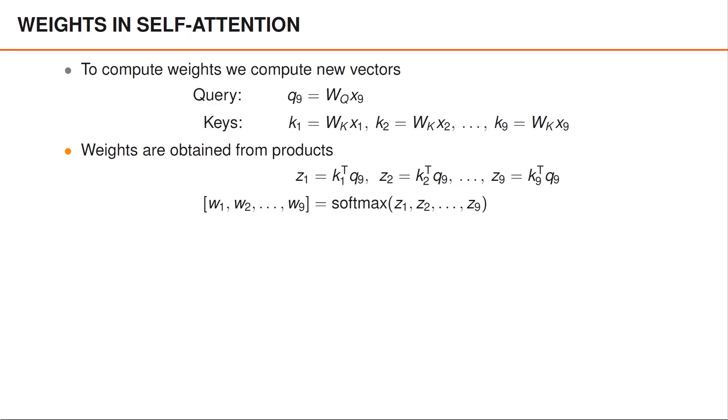So what do we gain by doing this? Well, it certainly looks more flexible and the matrices WQ and WK both contain free parameters that we can train.